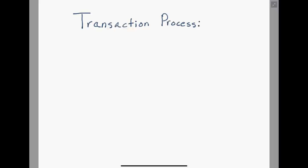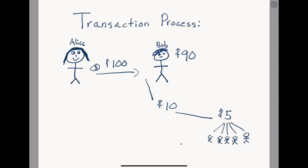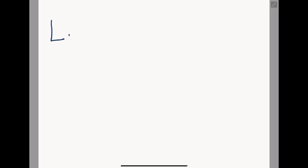For those of you who remember my first tokenomics video, I explained the transaction process of SafeMoon. If Alice sends Bob $100 in SafeMoon, 90% of that or $90 is received by Bob, and 10% or $10 is separated — split in half. 5% or $5 is redistributed to all SafeMoon holders and the other 5% is sent to liquidity. But what's liquidity?